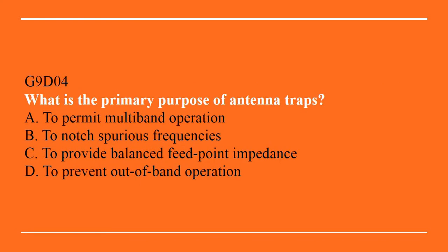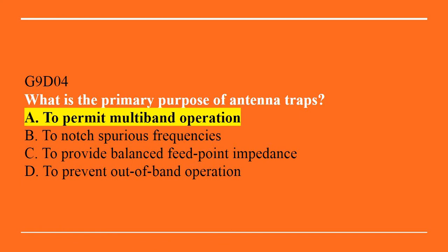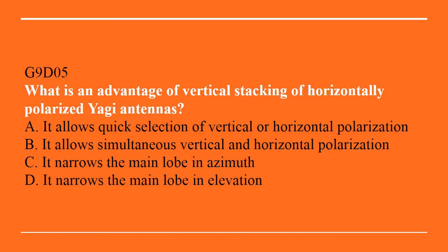G9D04: What is the primary purpose of antenna traps? A. To permit multiband operation. B. To notch spurious frequencies. C. To provide balanced feed point impedance. Or D. To prevent out-of-band operation. The answer is A, to permit multiband operation.